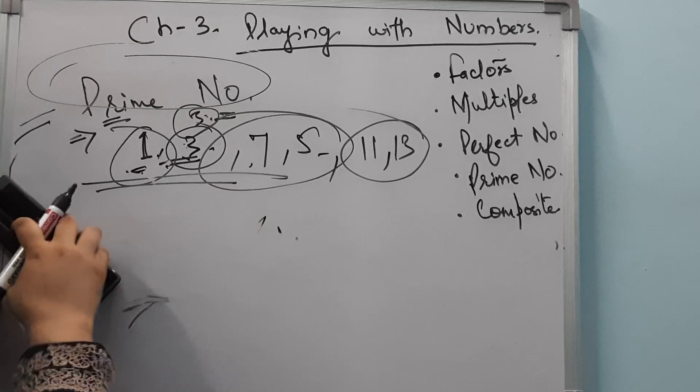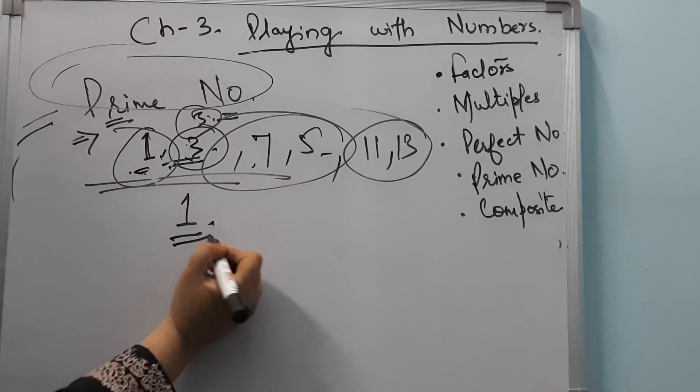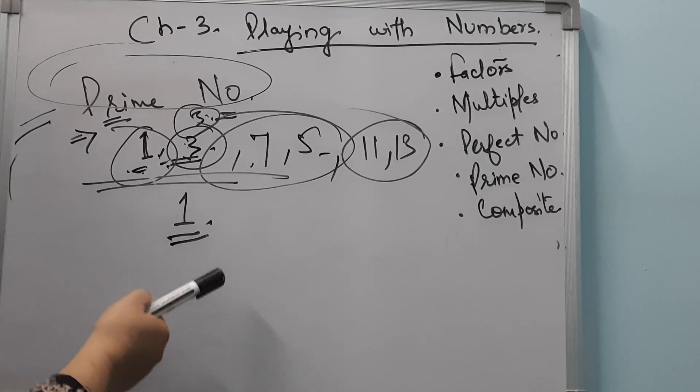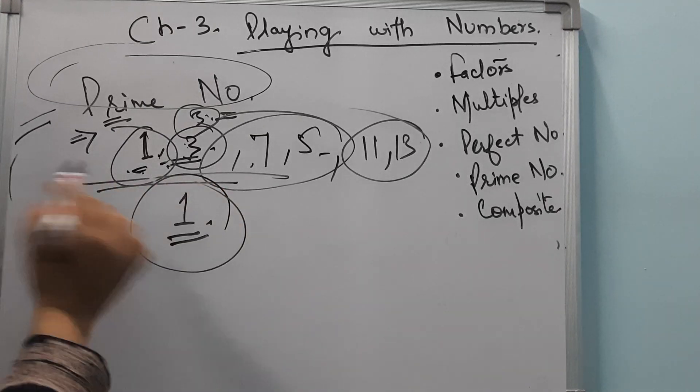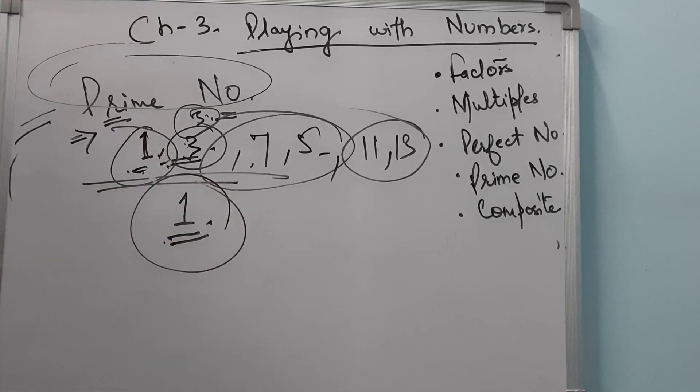Now let's talk about 1. The number 1 is the only number that is neither prime nor composite (1 naa toh prime hai, nor it's a composite number). Thank you.